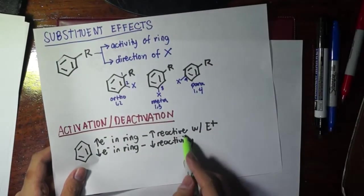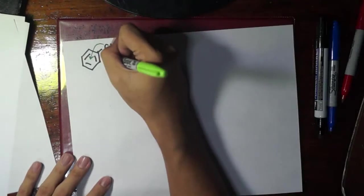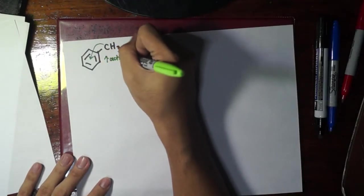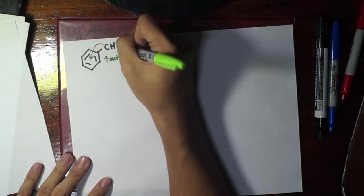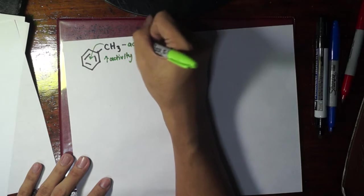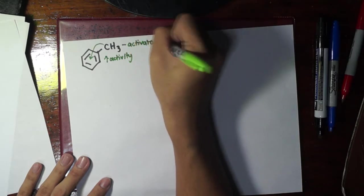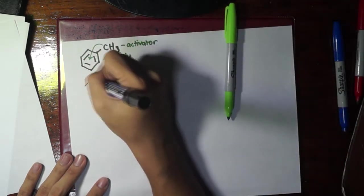So what happens, will this be activated or deactivated? Well, since it increases the electron density in the ring, it increases the reactivity, it increases the activity. So we say that this methyl group is an activator.